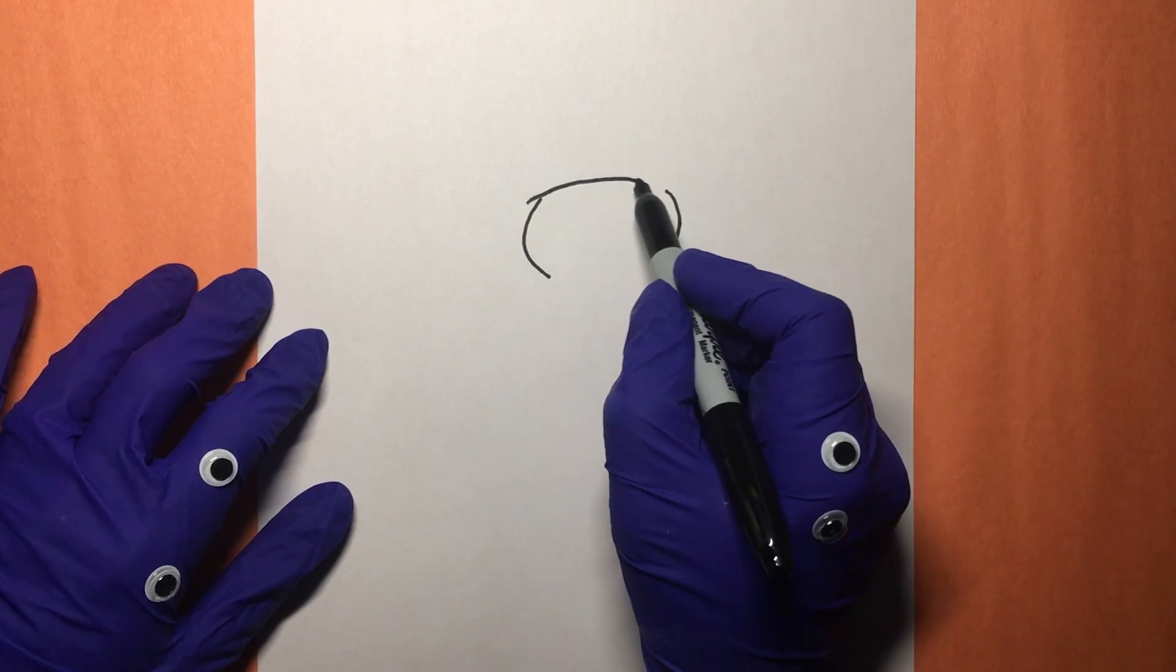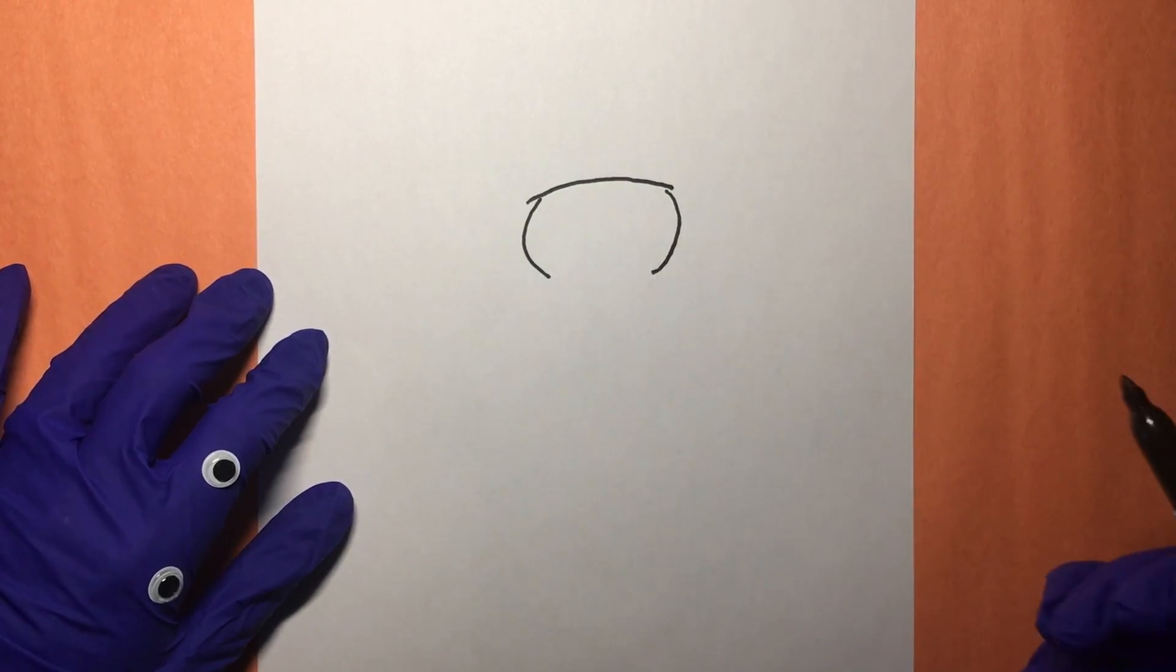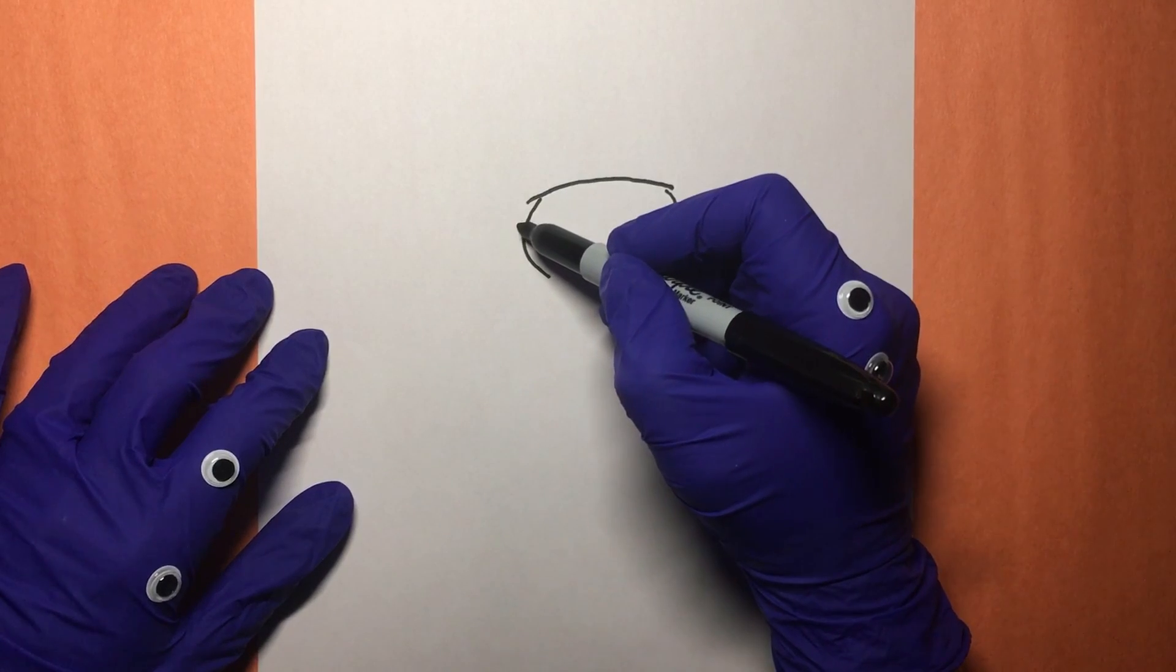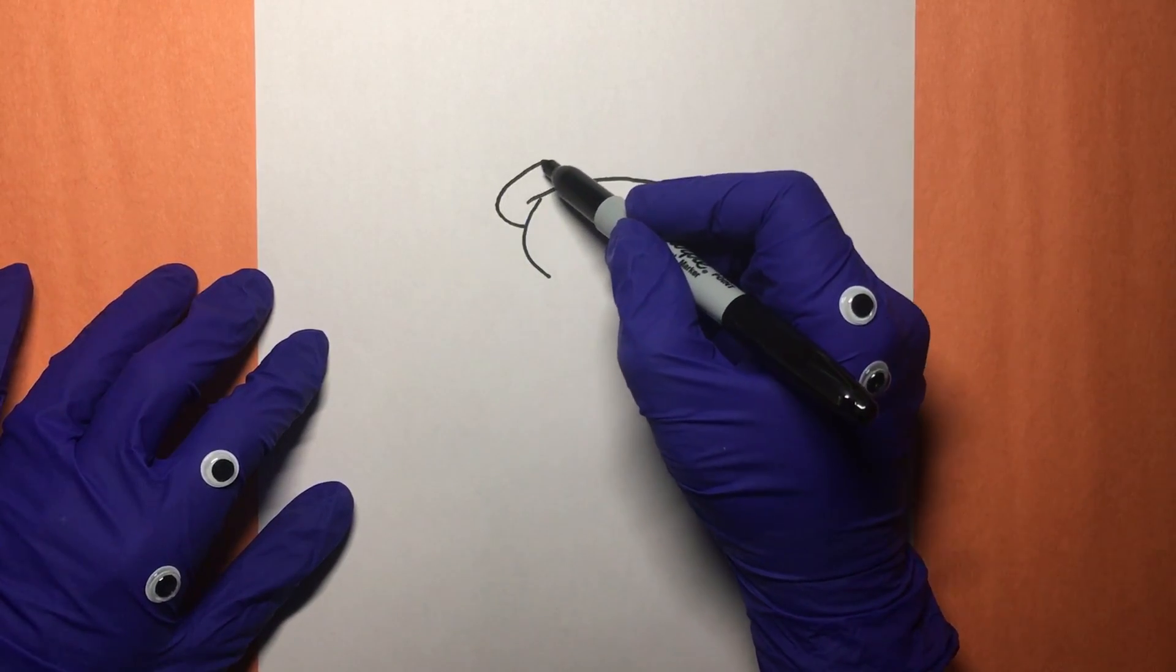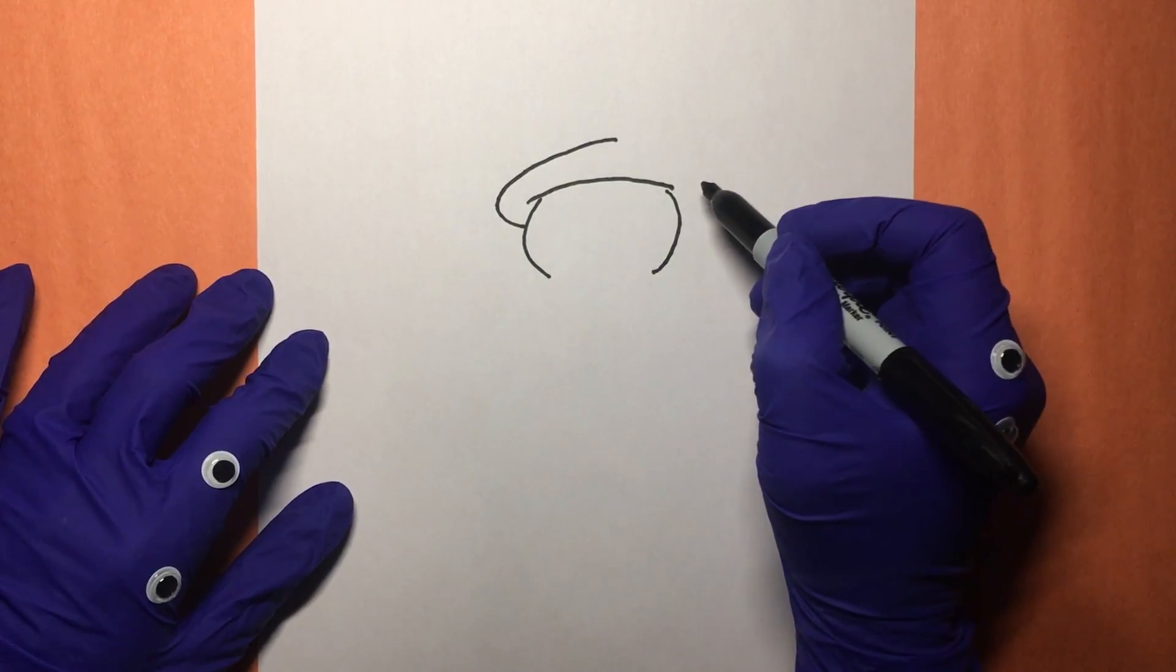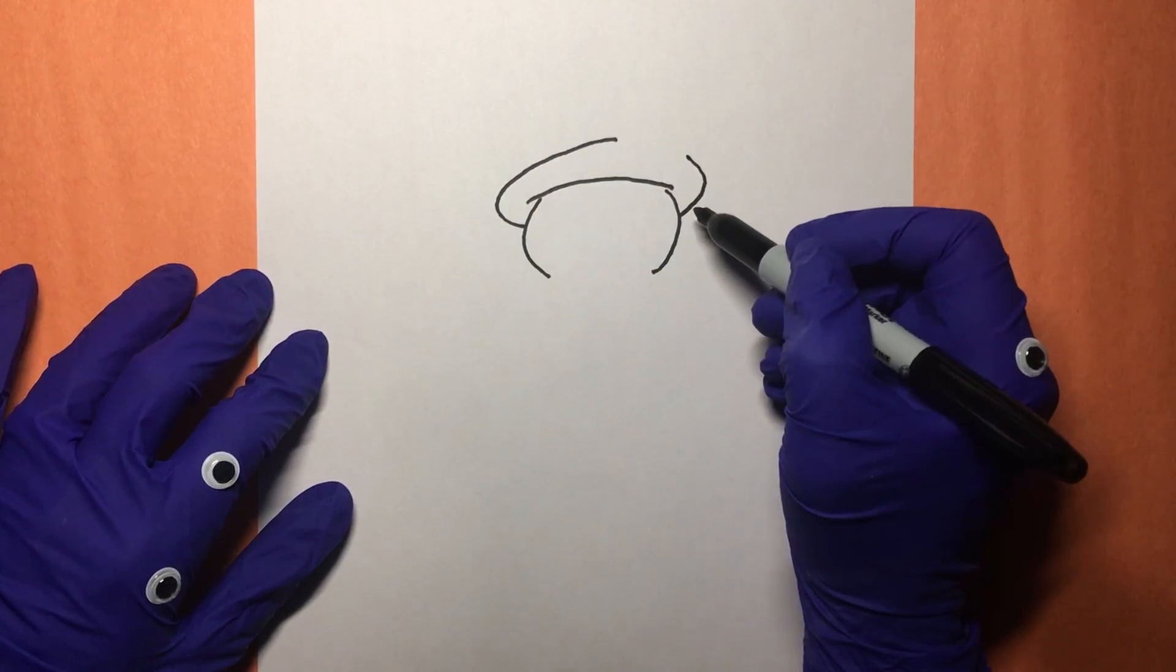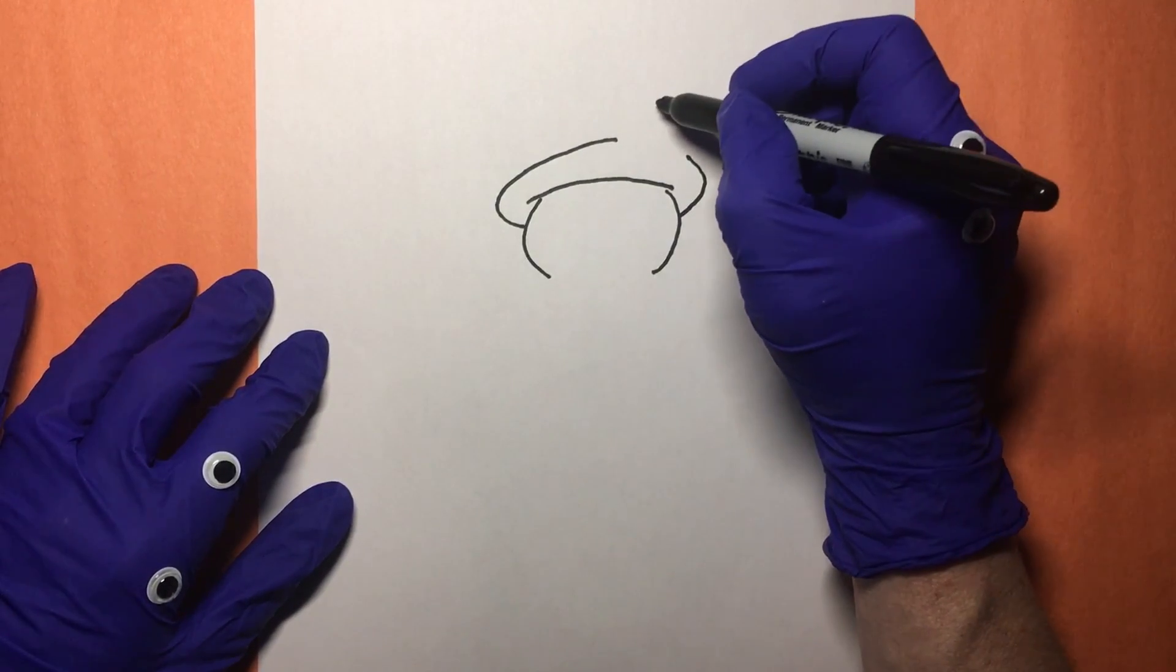Now we can draw his hat brim. That's where we're gonna put his old magic hat. Now semicircle the brim up like that, there we go, and connect it on the other side.